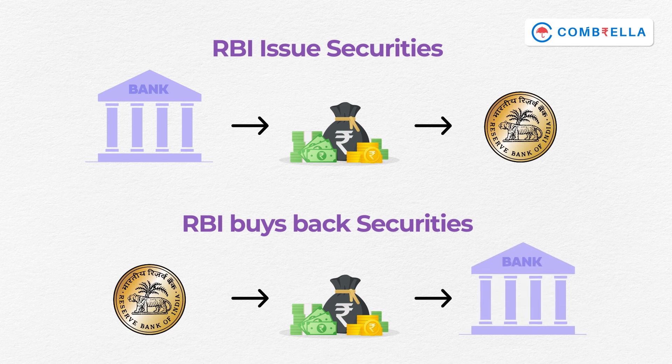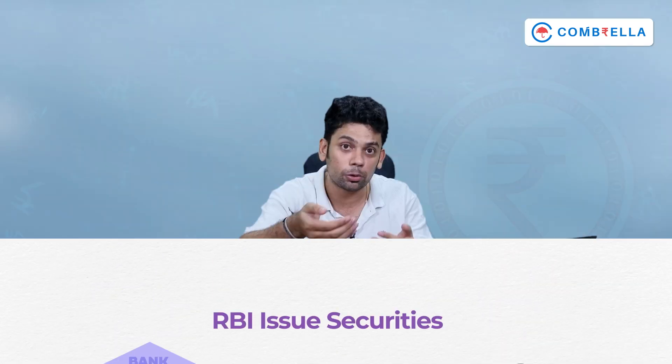During inflation, RBI will issue more securities to the banks and NBFCs, so that money will move out from the banks and come to the RBI. Because of this, the banks will have less money to give loans to the public. The money supply will reduce in the economy and inflation will automatically come down.